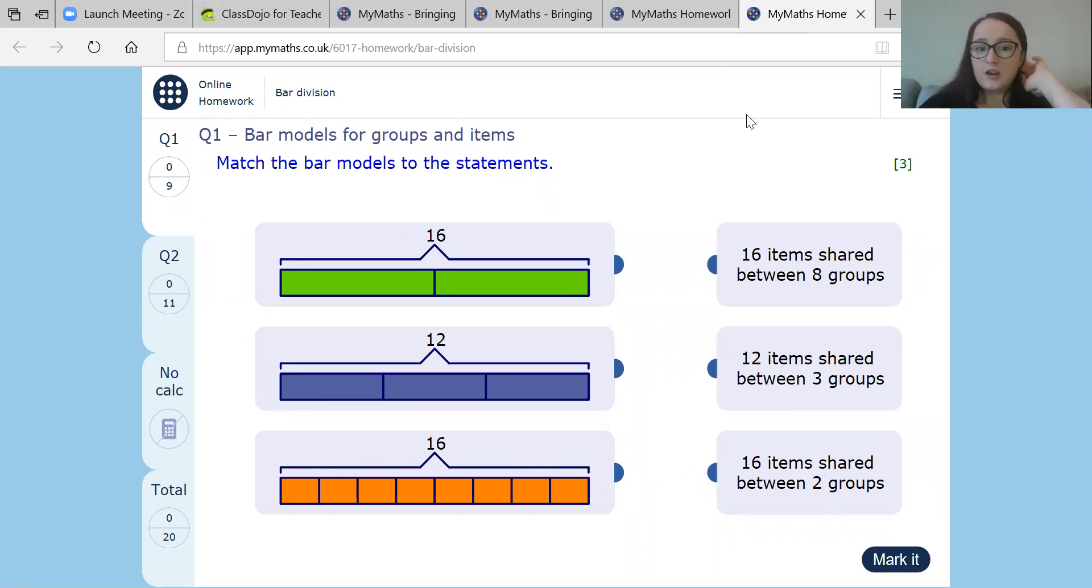So this is looking at the bar models. Now we've looked at these quite a bit over the past few weeks, especially looking at division and fractions. So it says here, match the bar models to the statements. So there's one where it's 16 where it's split up into two. There's 12 where it's split up into three. And there's 16 here where it's split up into eight. Okay, so what we need to do, we need to read the statements and see which bar model they're matched to.